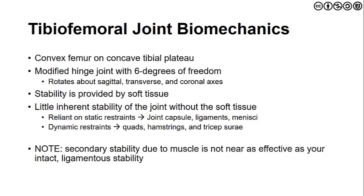When we look at the tibiofemoral joint biomechanics, the femur is convex and the tibial plateau is more concave. It is a modified hinge joint with primary two degrees of freedom, but really six degrees of freedom once we recognize rotation about the sagittal, transverse, and coronal axes. Stability is provided by the soft tissue we have already reviewed. There is little inherent stability of the joint without soft tissue — we must have the static restraints of the capsule, ligaments, and menisci, as well as the dynamic restraints of the quads, hamstrings, and triceps surae. A secondary stability due to muscle is not as effective as intact ligamentous stability, which is why individuals often have the ACL reconstructed or have meniscal arthroscopic surgery to provide that stability.